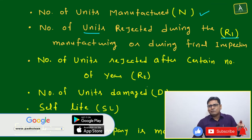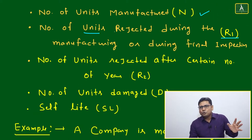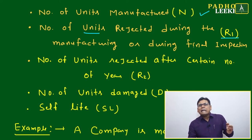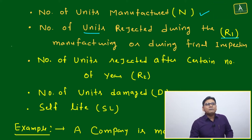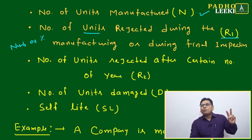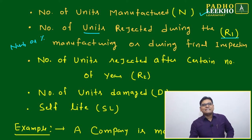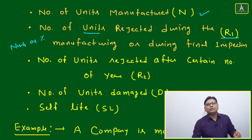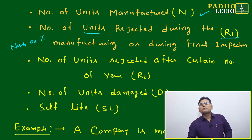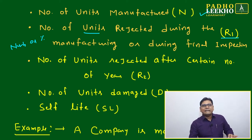Number of units manufactured will always be given as an absolute number, but units rejected during manufacturing or final inspection (R1) may be given as an absolute number or as a percentage. For example, if you are producing 1000 units and on average 150 units are rejected during processes, R1 = 150, which could also be given as 15%. Data can be given in two formats.